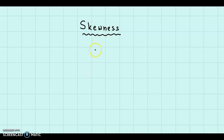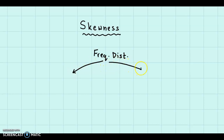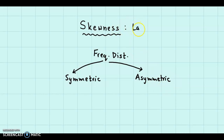In this video, we are going to talk about skewness. What exactly is skewness? We know about frequency distributions. Frequency distributions can be of two types: the distributions can be symmetric, or the distributions can be asymmetric — that is, there would be a lack of symmetry. And lack of symmetry means skewness. So, skewness basically means lack of symmetry.